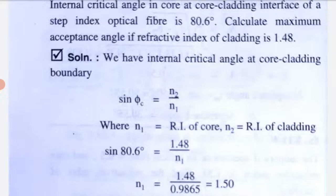In optical fibre there are core and cladding, each with their own refractive index — refractive index of core (N1) and refractive index of cladding (N2). First numerical: the internal critical angle at the core-cladding interface of a step index optical fibre is 80.6 degrees. Calculate the maximum acceptance angle if the refractive index of cladding is 1.48.